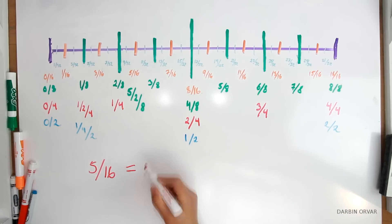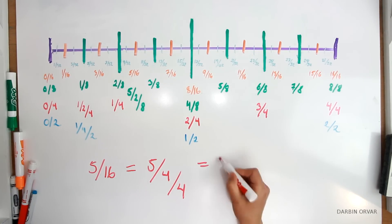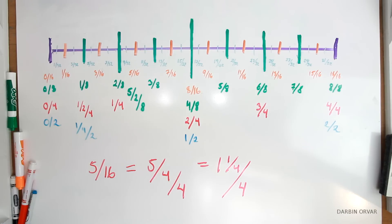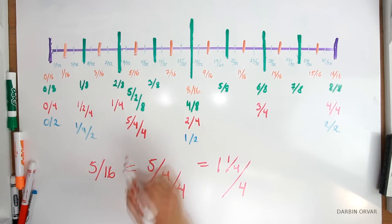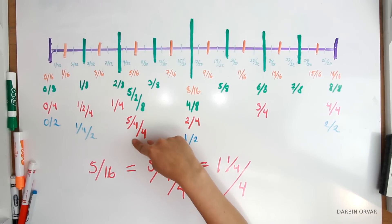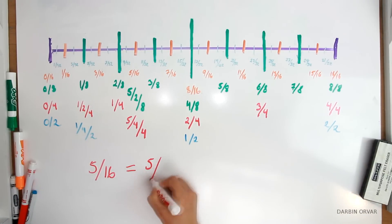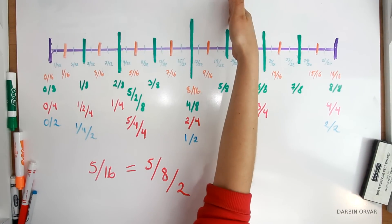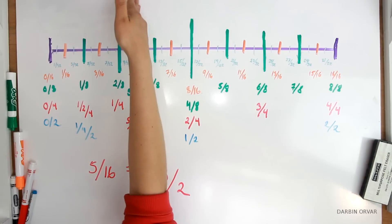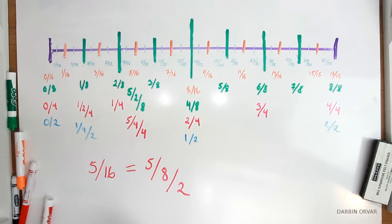Now, what if we want to see this in the quarter scale? That would be 5 fourths over 4. Or you could translate this as 1 and 1 quarter over 4. So let's write 5 sixteenths in the 4th scale. Now you can see that these numbers are all the same — it's just a matter of how you play with them. We could also translate 5 sixteenths to the half scale: one way to write that is 5 eighths divided in 2. You can see on the line that 5 eighths is over here, and if we divide that in half, we get to the 5 sixteenths line.